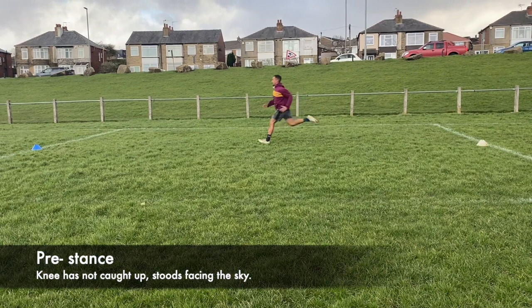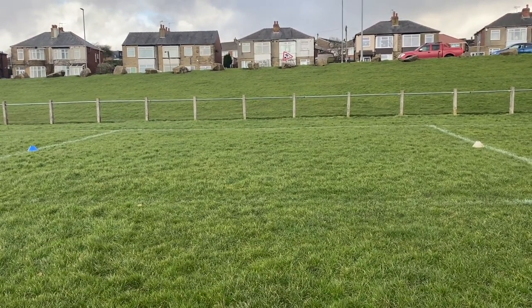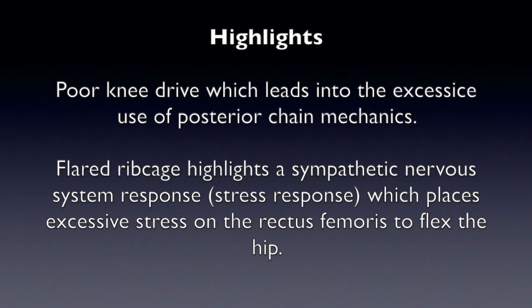During the pre-stance phase you can see the back knee has not caught up and the studs are clearly facing the sky, indicating an excessive use of the hamstrings to flex the knee. Athlete A's poor knee drive leads into the excessive use of the hamstrings. The flared ribcage highlights a stress response and discomfort at high speeds. This leads to further stress on the biarticular function of the rectus femoris to flex at the hip and knee.